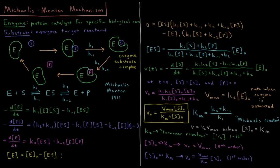We can also use the simplification that the concentration of enzyme equals the initial enzyme concentration minus the concentration of the enzyme-substrate complex: [E] = E0 - [ES]. At any given time, enzyme is either free or bound in the complex. Initially, we start with no enzyme-substrate complex and all free enzyme, but total enzyme is always conserved as free plus complexed. Via the steady-state approximation, we set d[ES]/dt = 0 and substitute E = E0 - [ES] to solve for [ES].